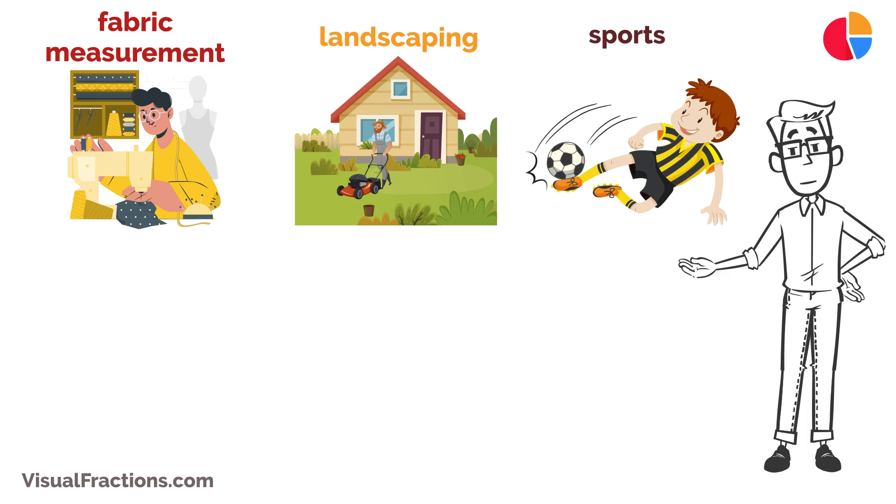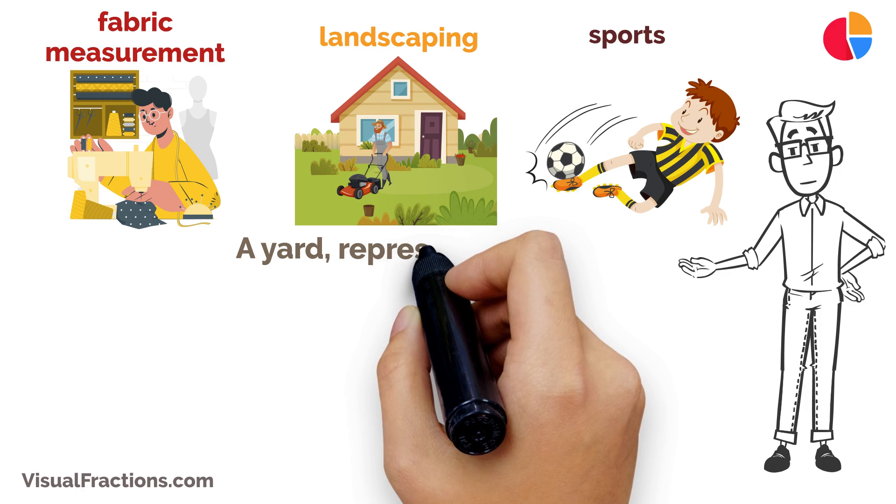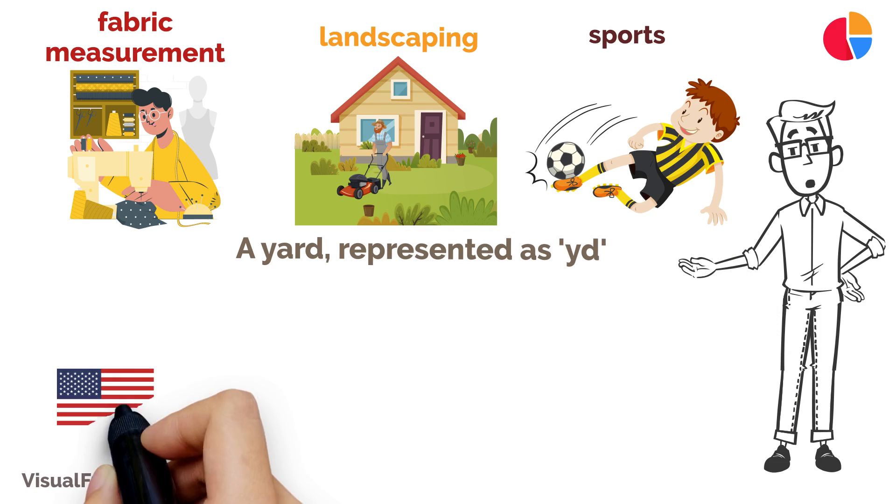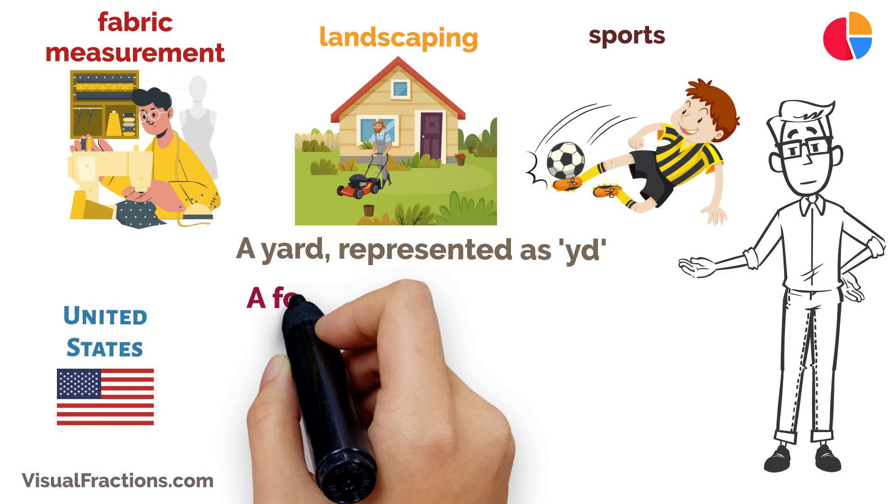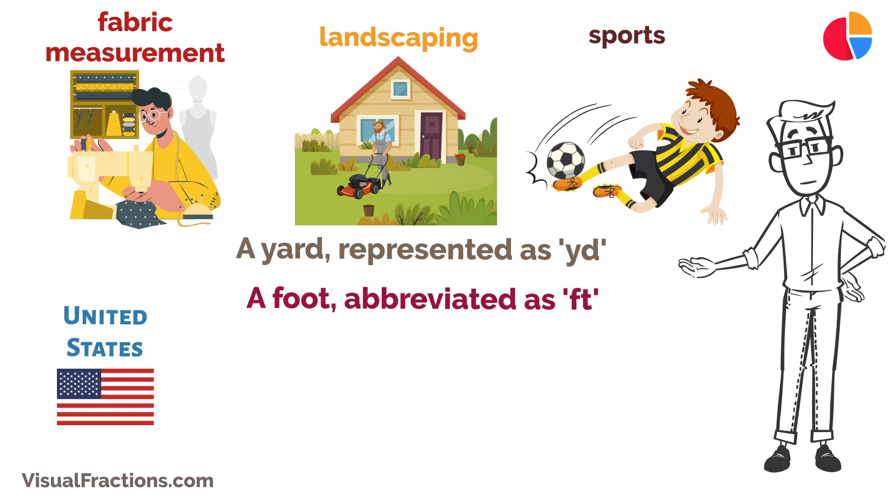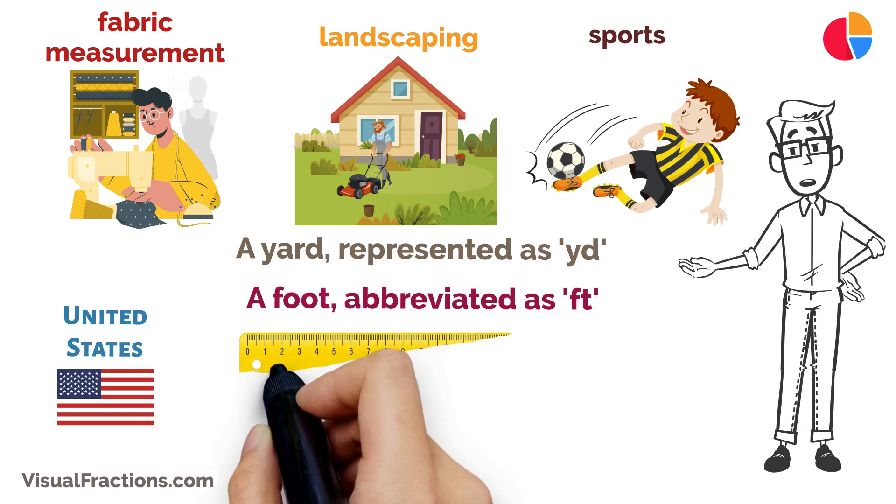Let's start with the basics. A yard, represented as YD, is a unit of length in the Imperial and United States customary systems. A foot, abbreviated as FT, is another unit of length in these systems.